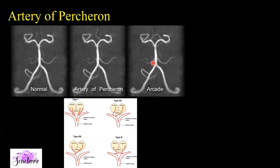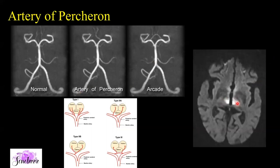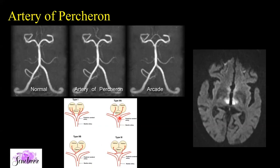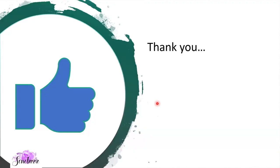Another important variant is the artery of Percheron. When you have symmetric areas of restricted diffusion involving bilateral thalami along their medial aspect, one of the most likely differentials is an artery of Percheron infarct. This is a variant where both thalami are supplied by a single vessel arising from one PCA — a single branch coming out from the PCA and then dividing into two to supply both thalami.